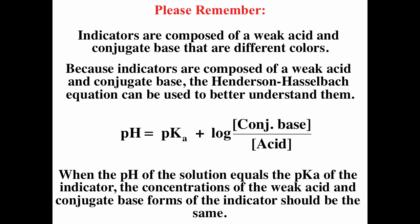Indicators are composed of a weak acid and conjugate base that have different colors. Because of this, the Henderson-Hasselbalch equation — pH = pKa + log([base]/[acid]) — can be used to better understand them. When the pH of the solution equals the pKa of the indicator, the concentrations of the weak acid and conjugate base forms of the indicator should be equal. I hope this helps.